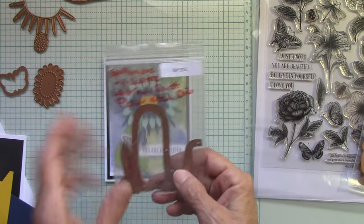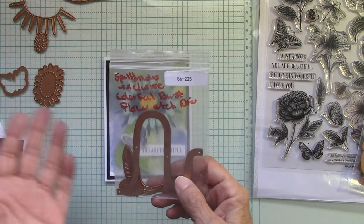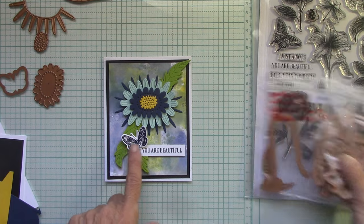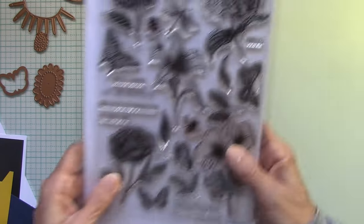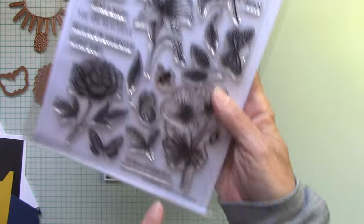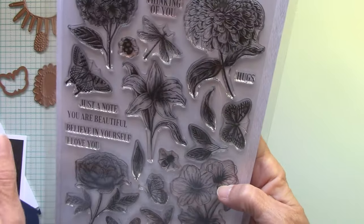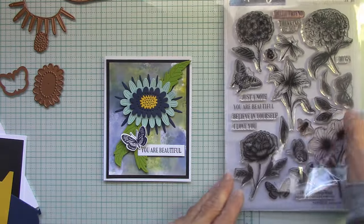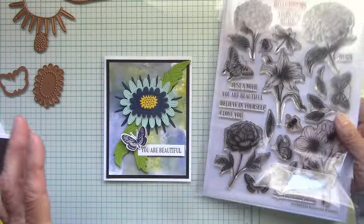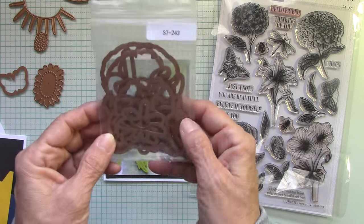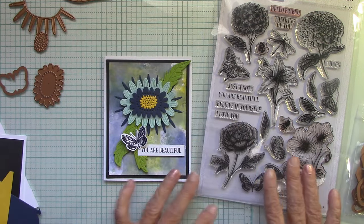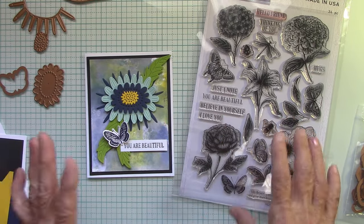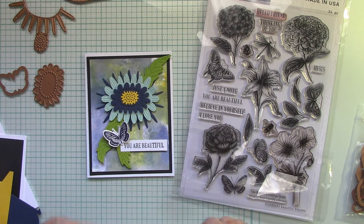Now my things come like this because they're samples from Spellbinders. The butterfly and the you are beautiful come from the new release Simon Hurley's Beautiful Blooms. I use this butterfly down here and every single one of these shapes has a die. Isn't that wonderful? This type of set is so versatile with anything that you do.